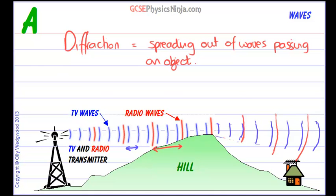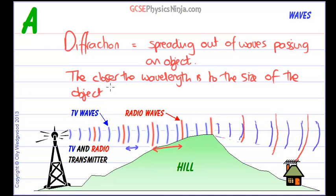So our explanation is: diffraction is the spreading out of waves passing an object. The closer the wavelength is to the size of the object, e.g. the hill, the more diffraction occurs.